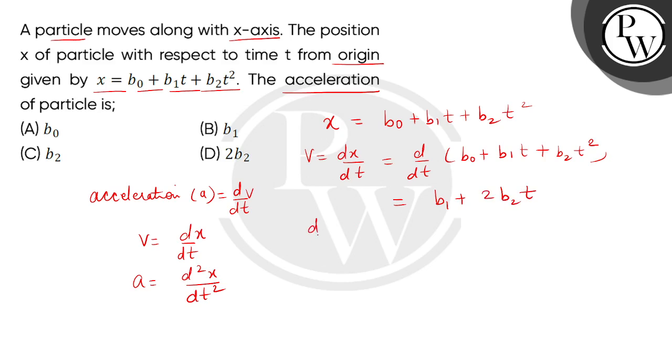Now we will again differentiate velocity with respect to t. So, this is d by dt of b1 plus 2b2t, which will give us acceleration. So, the answer we get is 2b2.